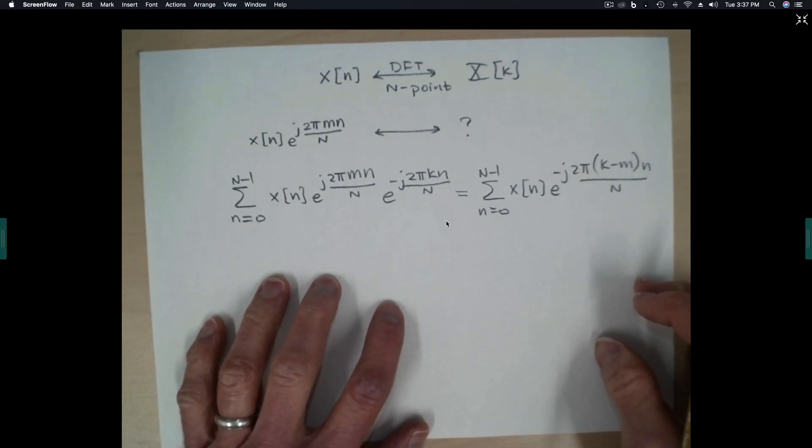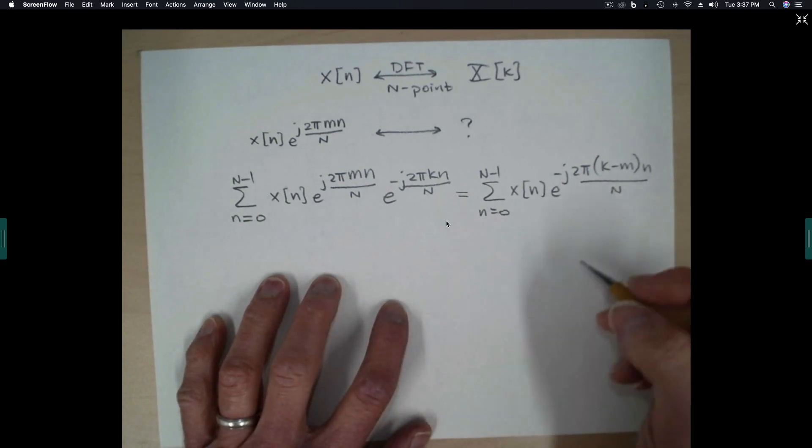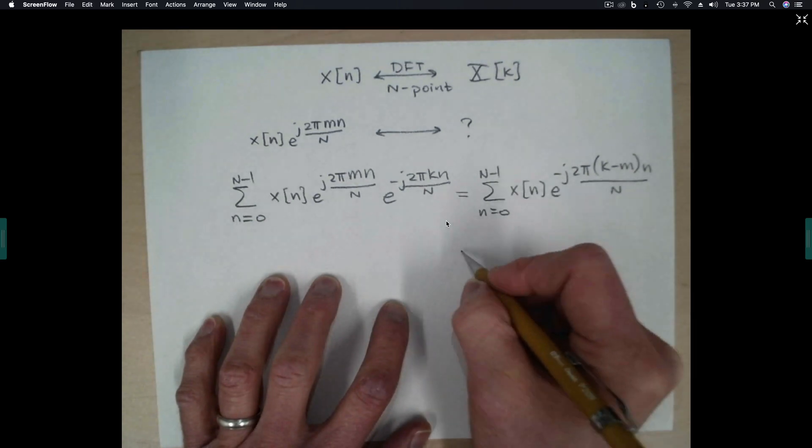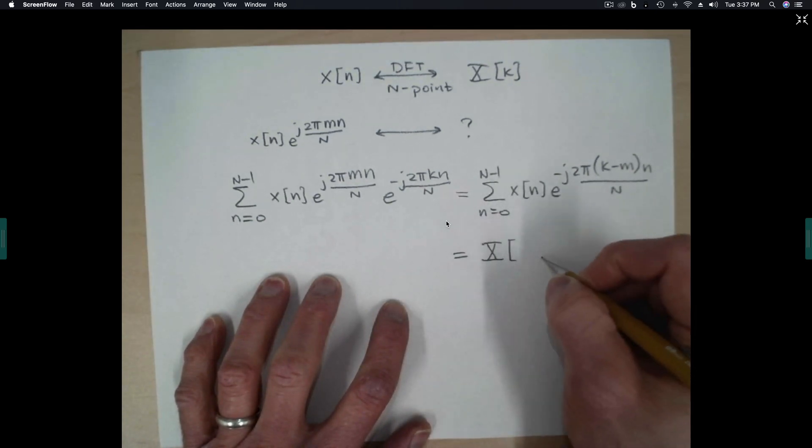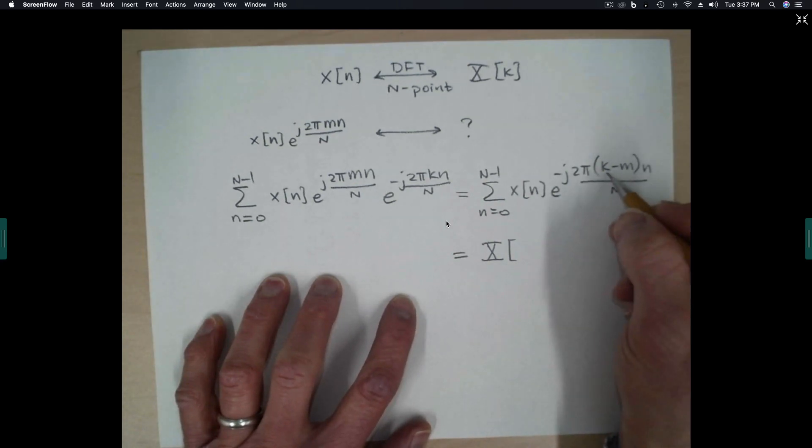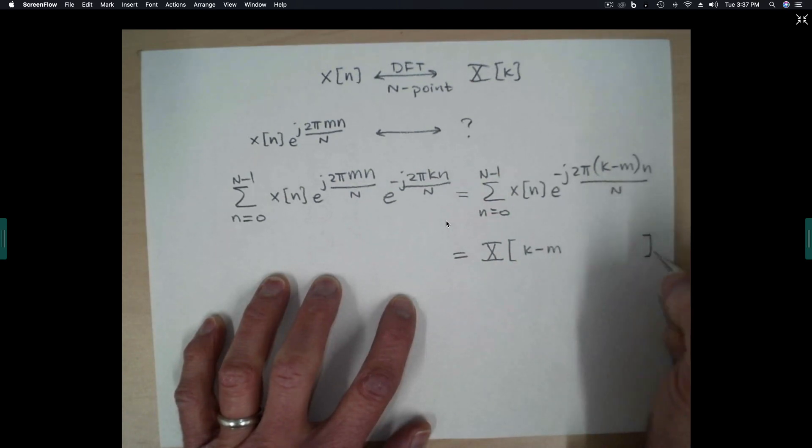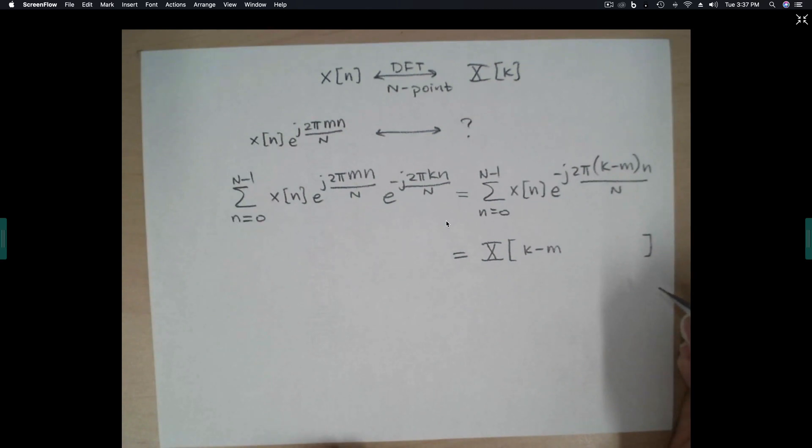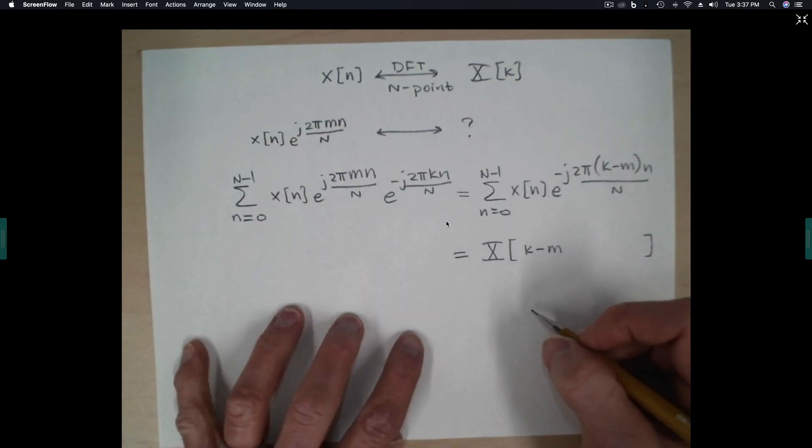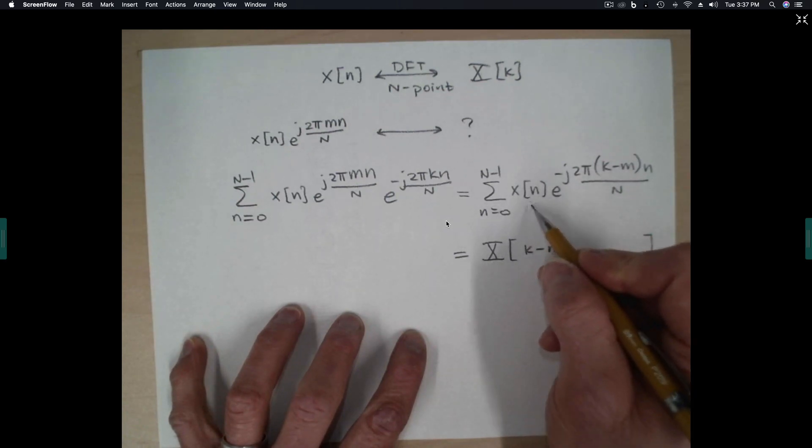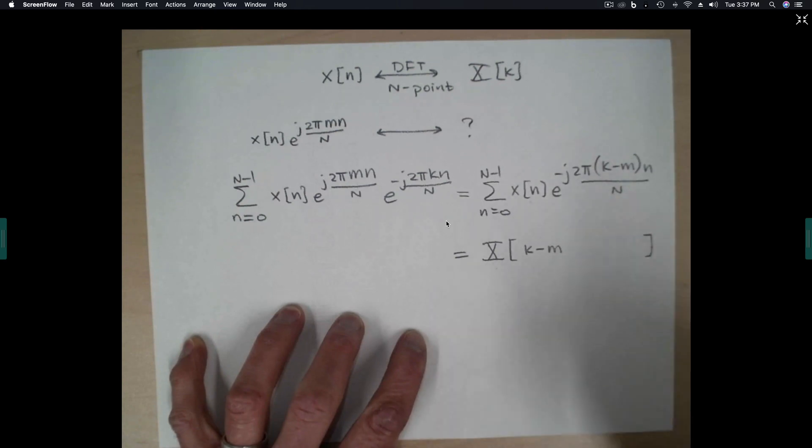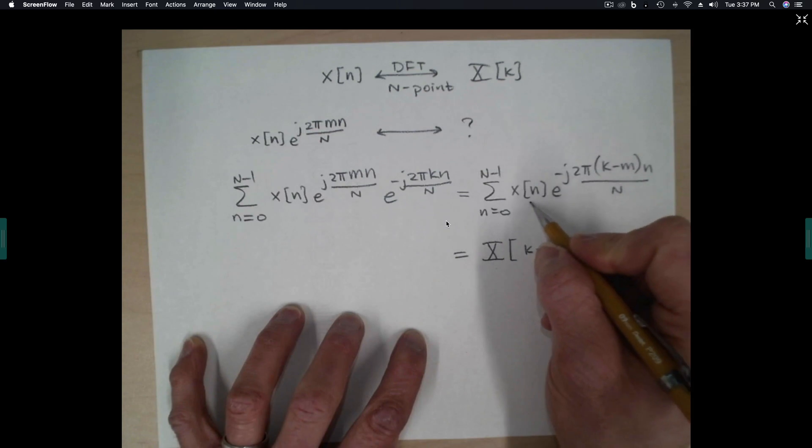And now we have come to the point where I was just talking about a minute ago. What this looks like to us, we'd like to say, oh, this is the DFT evaluated at k minus m. I'm going to leave some space here. But the problem with that is, just like our time domain sequence, the DFT can only be evaluated. In other words, this argument has to stay between 0 and capital N minus 1. Just like our time domain sequence, it's only defined between 0 and capital N minus 1.